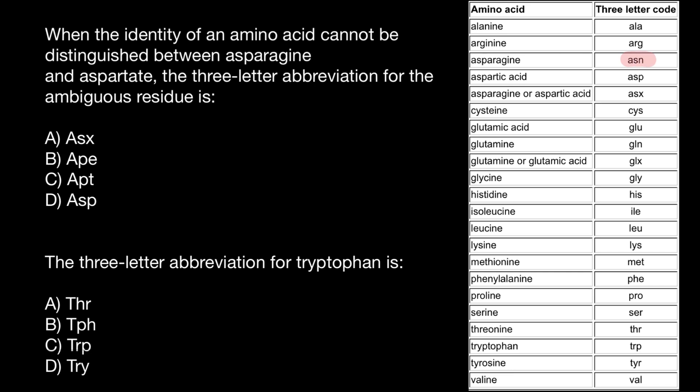This is the first amino acid whose three-letter abbreviation is different from what you'd expect. Now, when we are not sure whether we have asparagine or aspartic acid — because these two amino acids are very similar — the three-letter abbreviation uses the first two letters of both names and the last letter is X, where X stands for unknown.